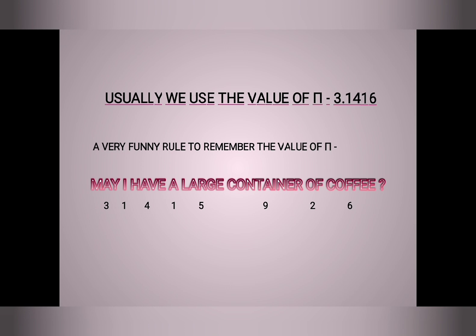If I put the decimal point between 3 and 1, then it would be the approximate value of pi, 3.141592... I have discussed different values of pi. All the values I have discussed are approximate values of pi, because 3.1416 or 355/113 are all rational numbers. But pi is an irrational number, so 3.1416 or 355/113 is assumed as the value of pi. We can't write the actual value of pi since the actual value is non-terminating and non-recurring. Mathematicians and scientists are still working hard to determine the value of pi.